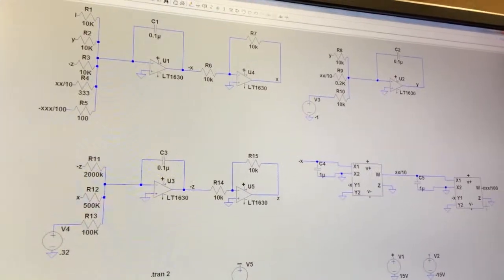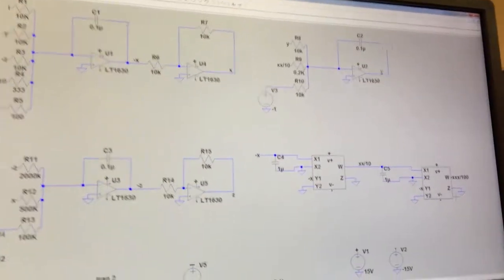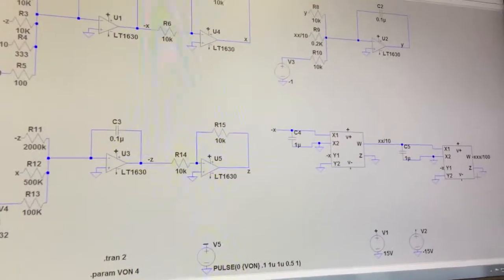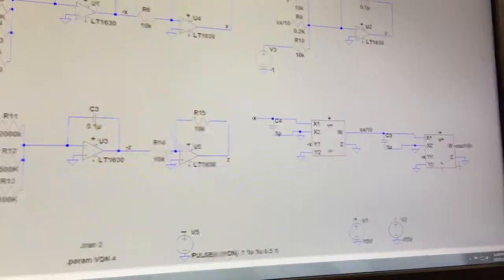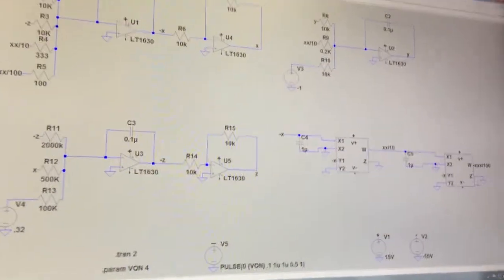Now, the AD633 has a supply voltage of plus or minus 18 volts and a storage temperature of up to 150 degrees Celsius.